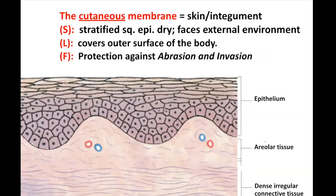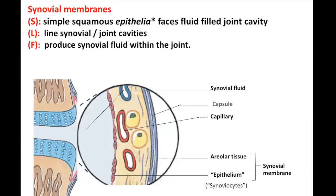Another membrane is called the synovial membrane, named for the synovial joints — or maybe the joints are named after the synovial membrane. This is a simple squamous epithelial called synoviocytes. They line the joint cavity, and then they're underlied by areolar tissue, a loose connective tissue. They're producing fluid which fills up your joint cavity. That's your synovial membrane.